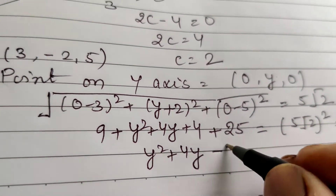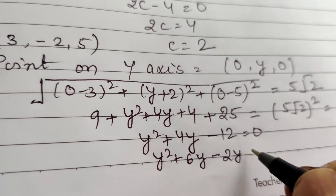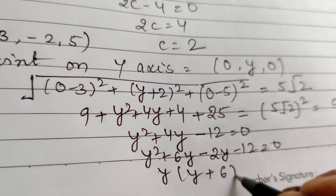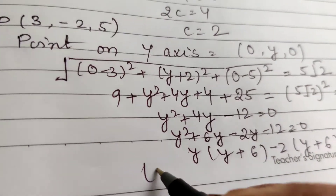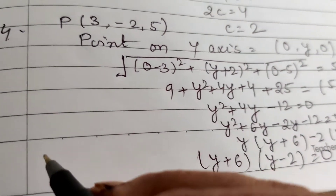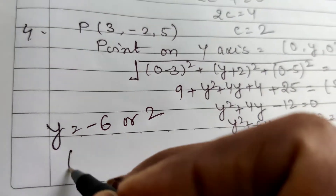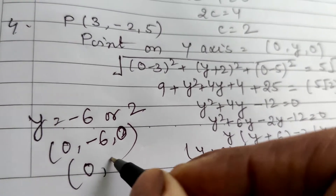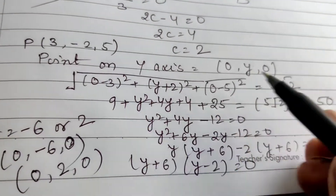Factoring by middle term split: y² + 6y - 2y - 12 = 0, so y(y + 6) - 2(y + 6) = 0, giving (y + 6)(y - 2) = 0. Therefore y = -6 or y = 2. The required points are (0, -6, 0) and (0, 2, 0).